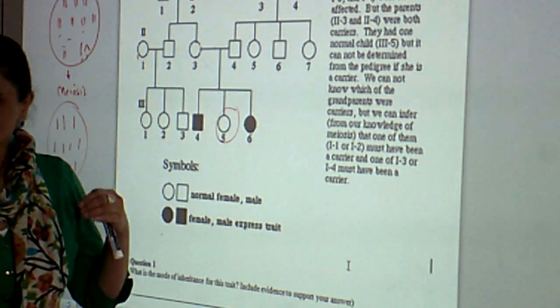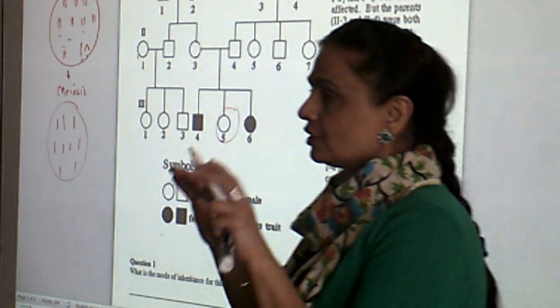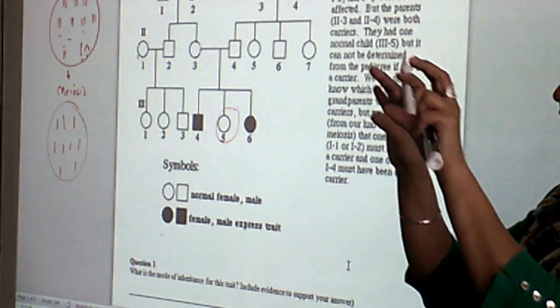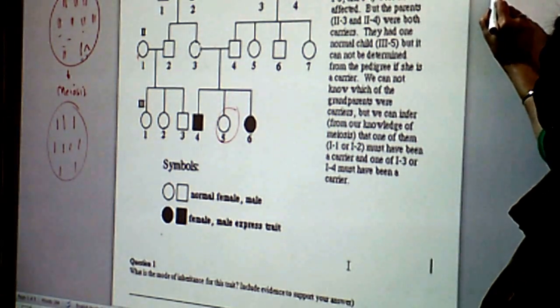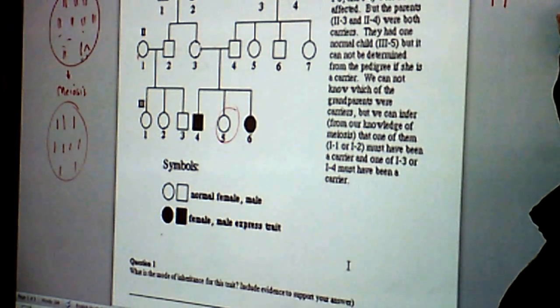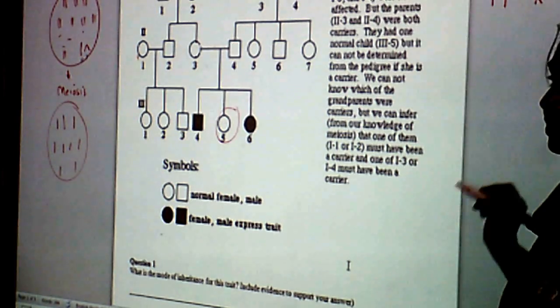So whether she would be affected or not. If we know the genotypes of the parents, we can work out the probabilities. So we know the genotypes of the parents, and they are this and this. They're heterozygous.